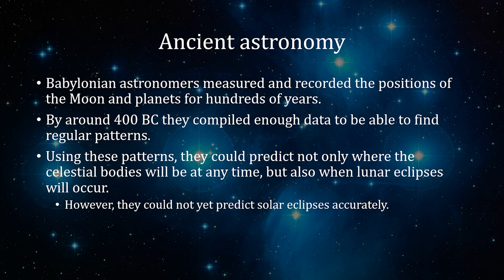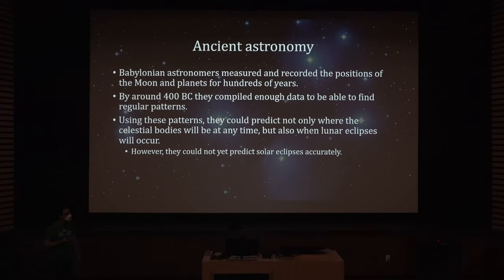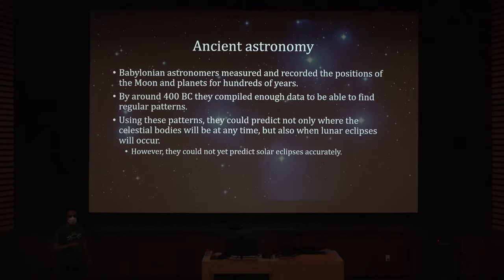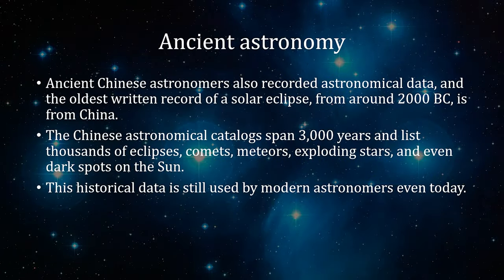Babylonian astronomers measured and recorded the positions of the moon and planets for hundreds of years. By around 400 BC they compiled enough data to find regular patterns, and using those patterns they could predict not only where celestial bodies would be at any time, but even when lunar eclipses would happen — though they couldn't yet predict solar eclipses. Ancient Chinese astronomers also recorded astronomical data, and the oldest written record of a solar eclipse is from around 2000 BC from China — 4,000 years ago.